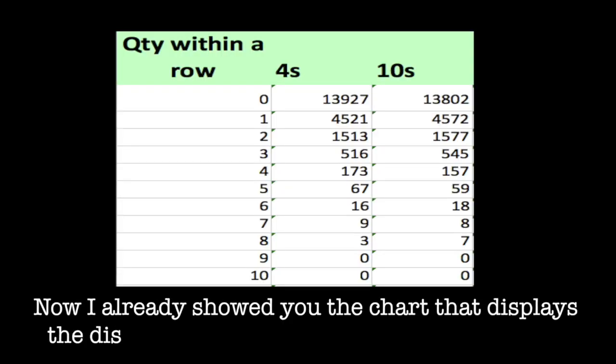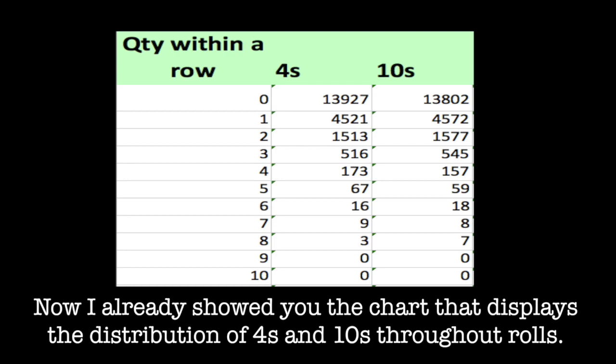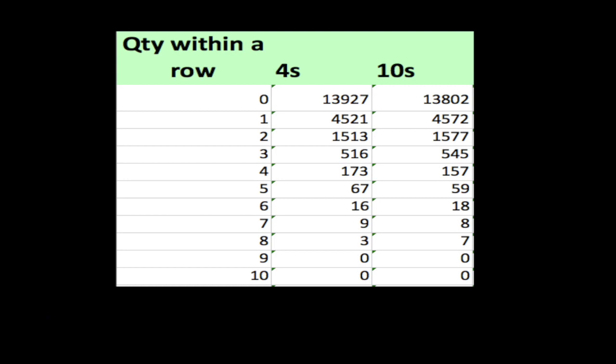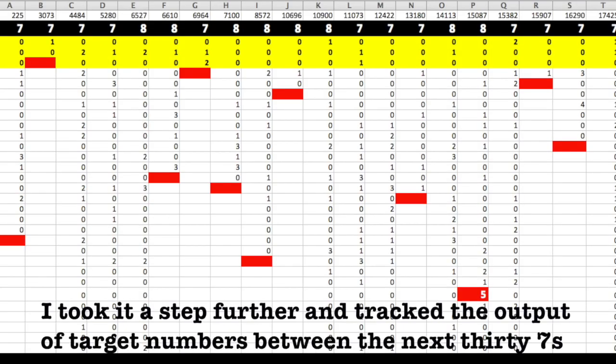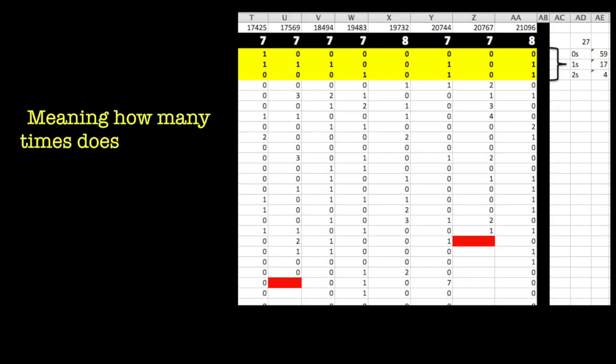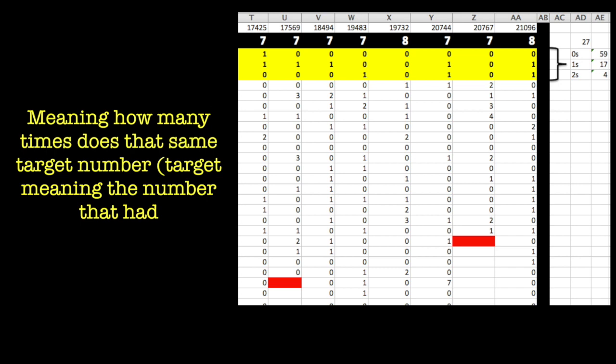Now, I already showed you the chart that displays the distribution of fours and tens throughout rolls. I took it a step further and tracked the output of target numbers between the next 30 sevens, meaning how many times does that same target number, and by target I mean the number that had the high output, roll between the next 30 or so sevens.